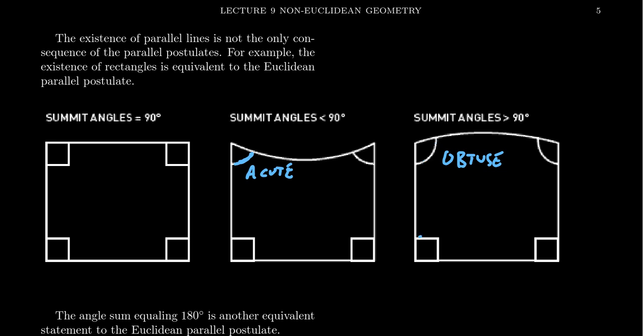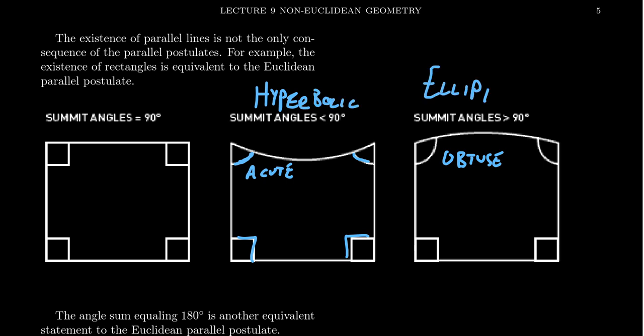If I take two right angles and two obtuse angles, the angle sum of this elliptic quadrilateral will exceed 360 degrees — you don't see that in Euclidean geometry. In the hyperbolic quadrilateral, you have two acute angles and two right angles, so the angle sum is actually less than 360 degrees. It's in Euclidean geometry where we have the principle that the angle sum of a quadrilateral is 360 degrees. Rectangles only exist in Euclidean geometry because that angle sum theorem is proven by the Euclidean parallel postulate. Without it, you don't get it.